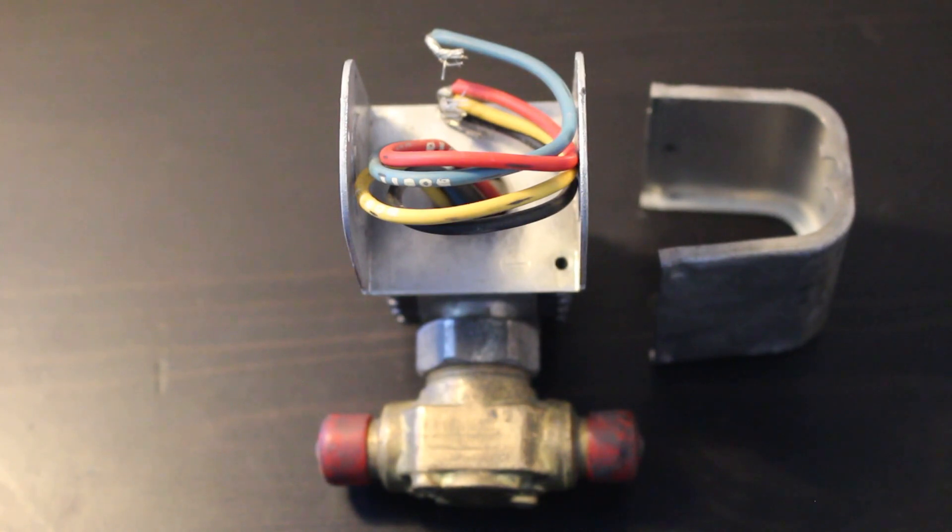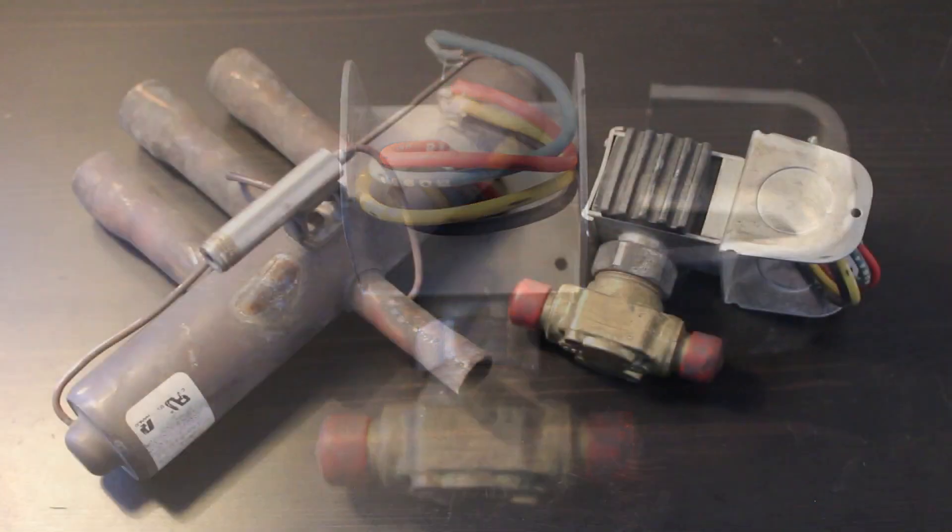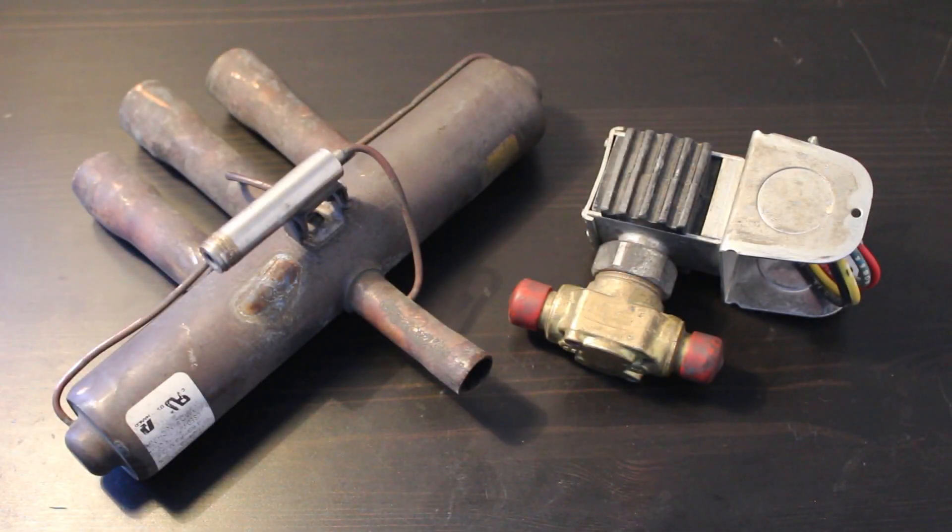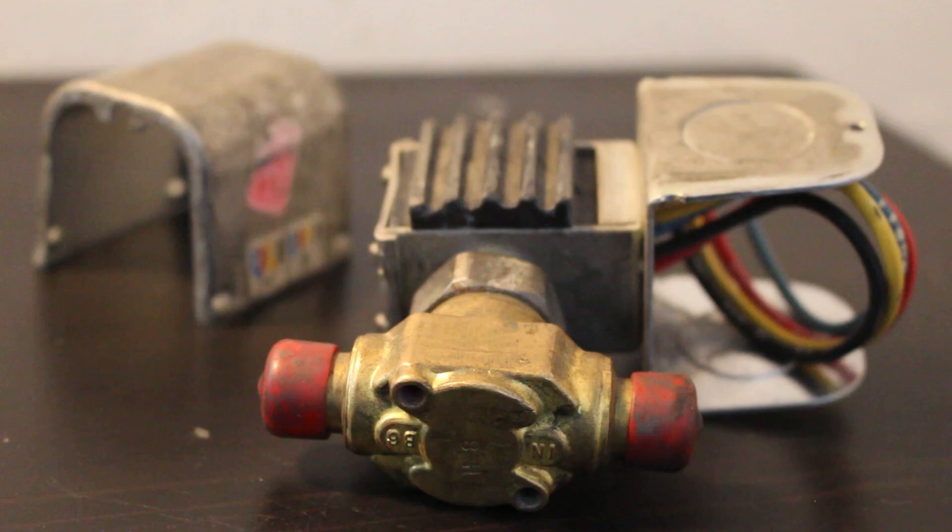A solenoid valve is an electrically operated valve that is used to control the flow of gases or liquids. Solenoid valves can range in complexity from a simple on-off valve to a four-way reversing valve used on heat pumps. This type of valve is most used to control the flow of gas or liquid in an air conditioning or refrigeration system.